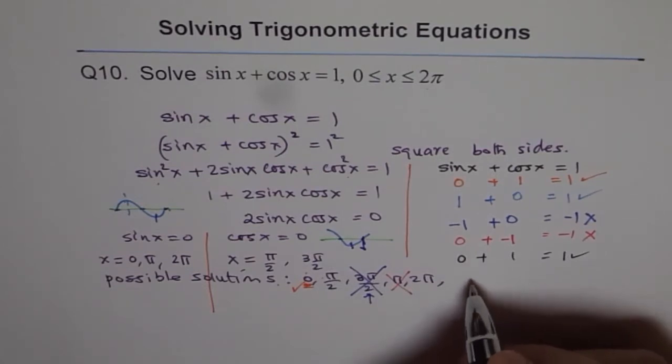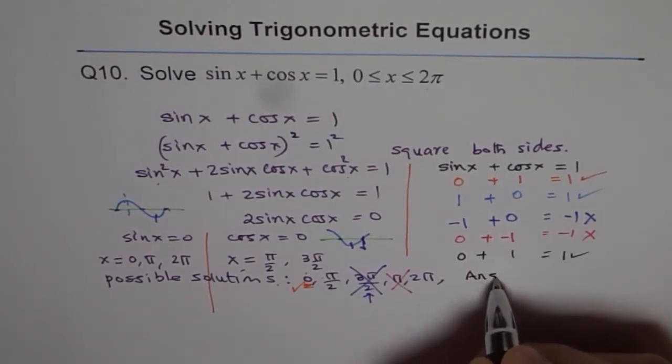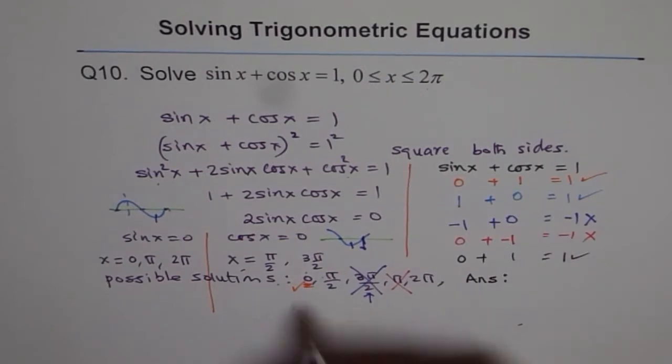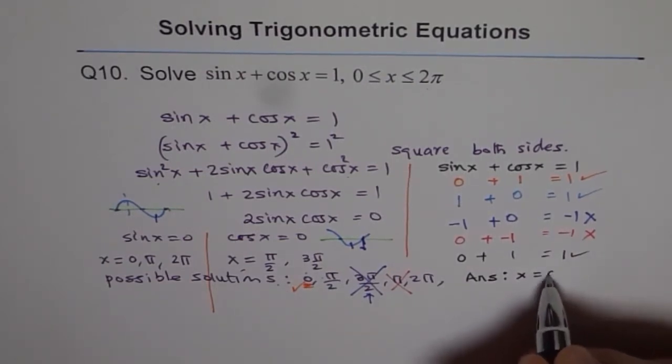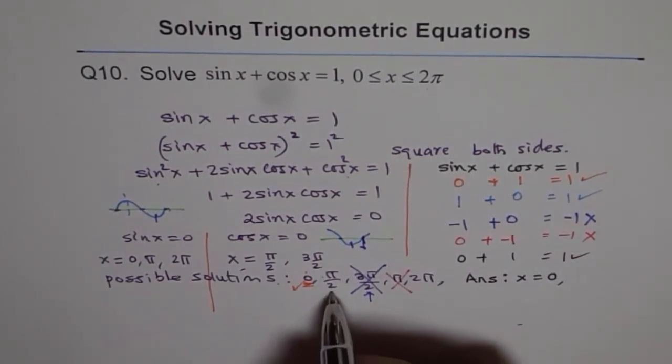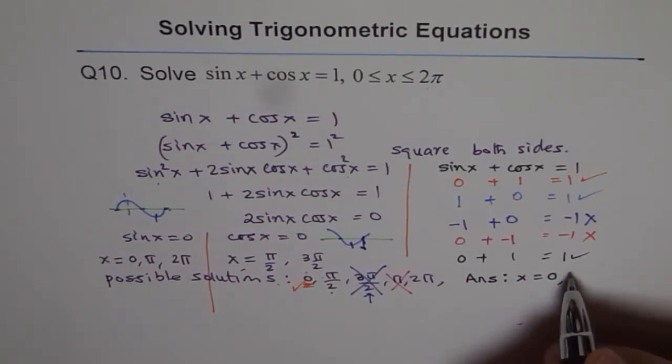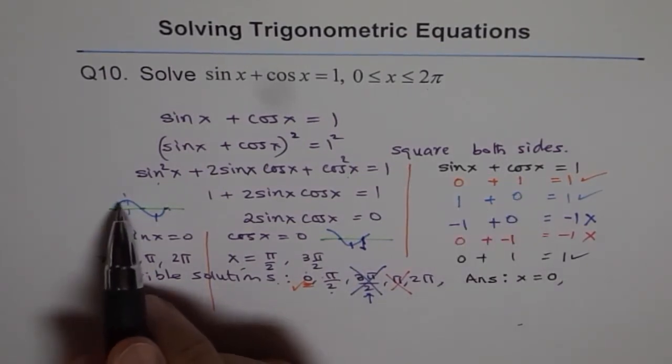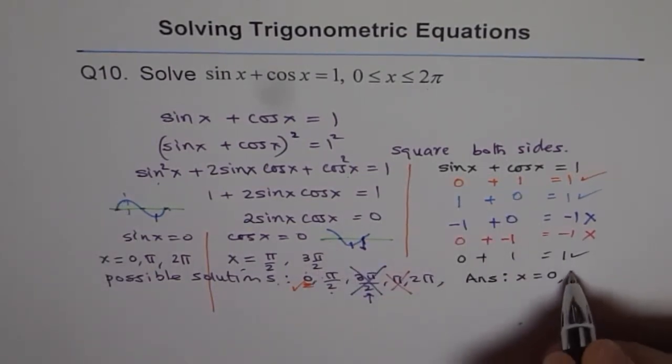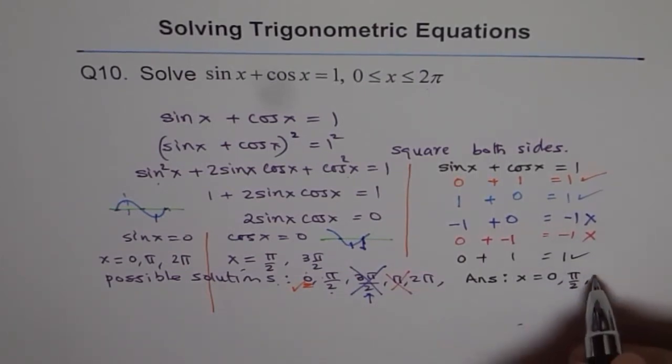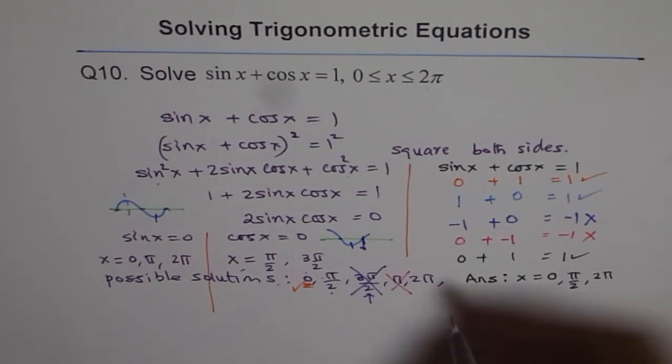Therefore, we can say the answer is, our solution really is x equals 0, π/2, and 2π. These are the 3 solutions for us.